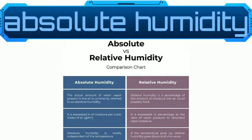Absolute humidity is the amount of water vapor in grams per cubic meter of the air, and is normally expressed in those units. For example, if absolute humidity is 20 grams per cubic meter, it means that in a sample of one cubic meter of air, the amount of water vapor present is 20 grams.